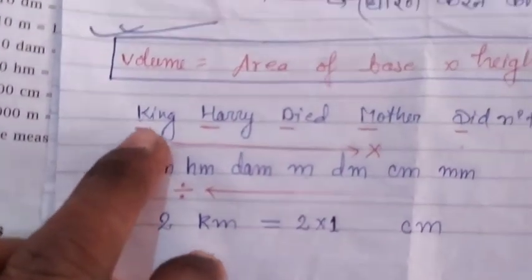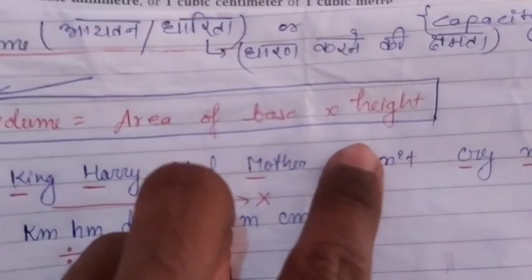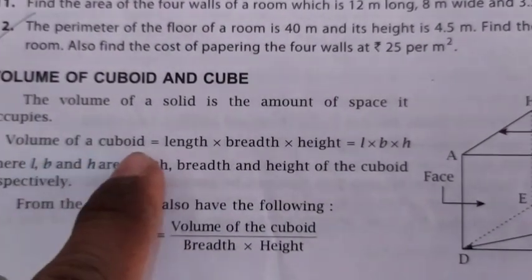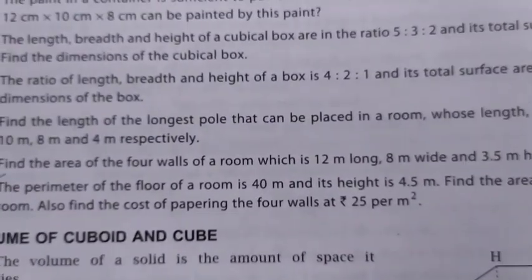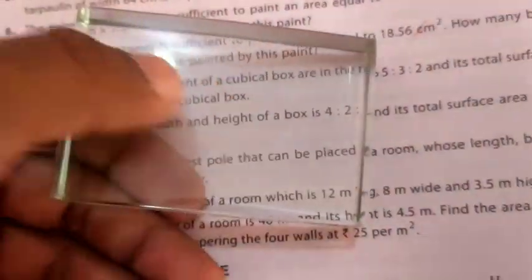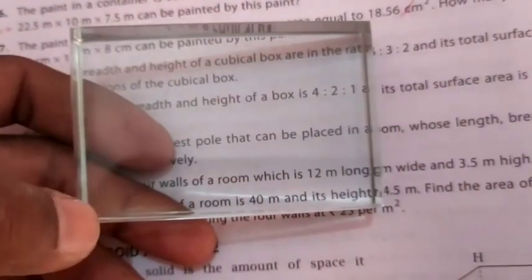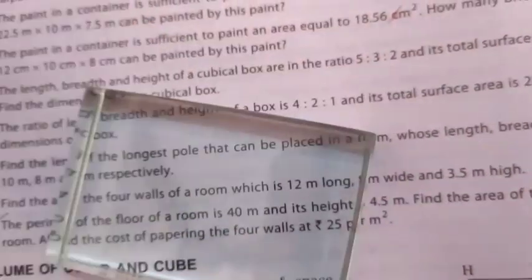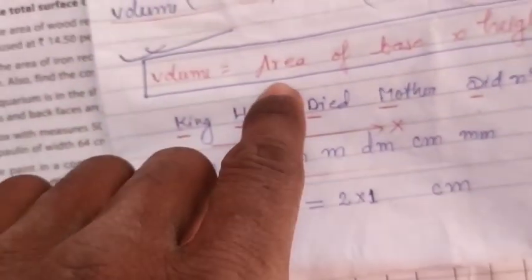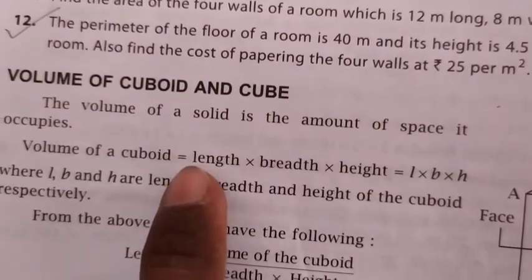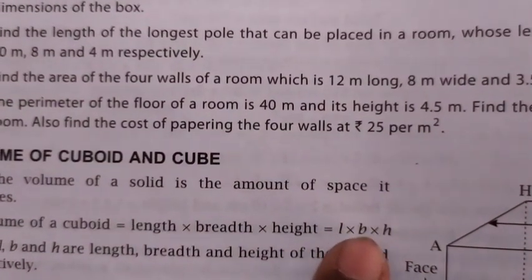The volume of a cuboid is length into breadth into height. The base area is length into breadth, and then multiplied by height. So the volume formula is L × B × H — in short we call it LBH.